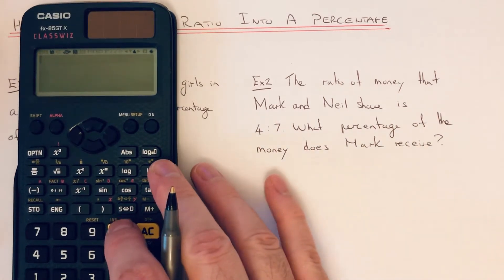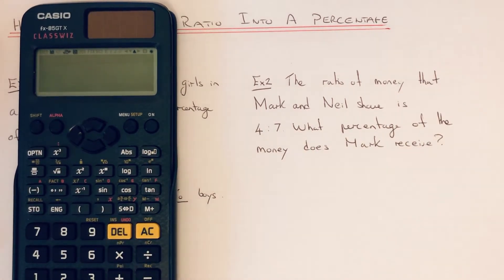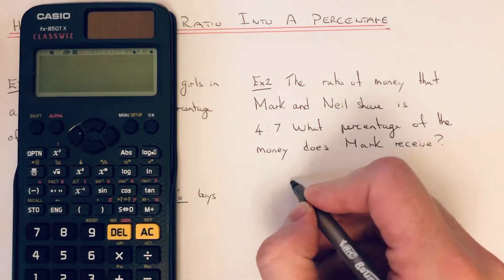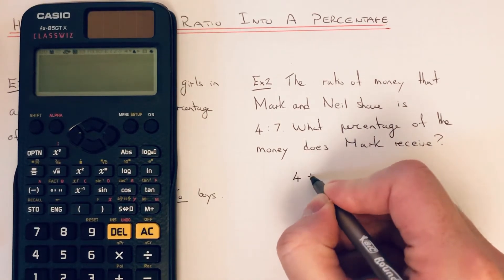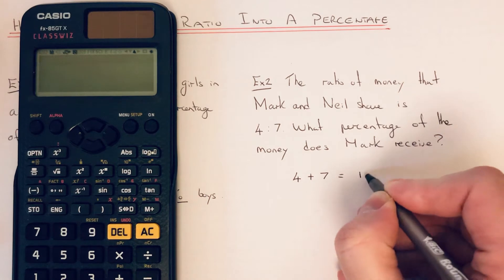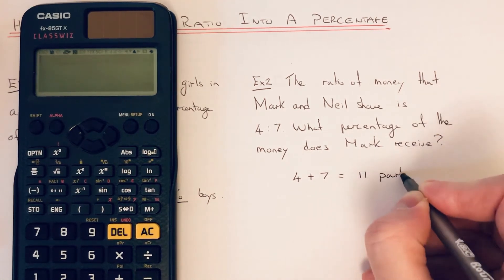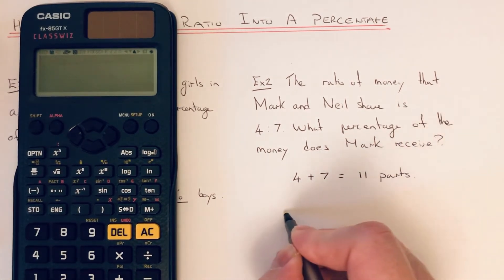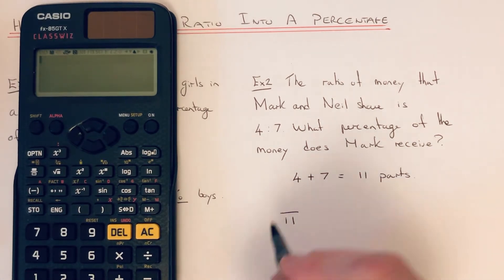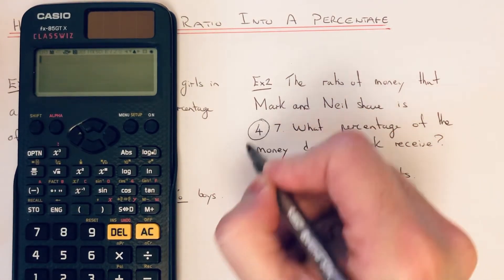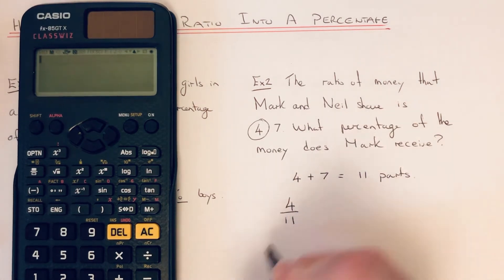Again, let's write down the fraction of money that Mark gets. If we add up the parts in the ratio, that gives us 11 parts. So 11 will go on the denominator of the fraction. And since we're after Mark's share, we put the 4 on the numerator.